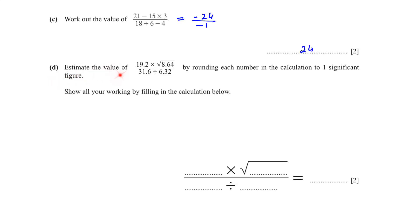D: estimate the value of this equation that they have given us by rounding each number in the calculation to one significant figure. And you have to show all your work by filling in the calculation below. 19.2, if I round it to the first number, it will become 20.